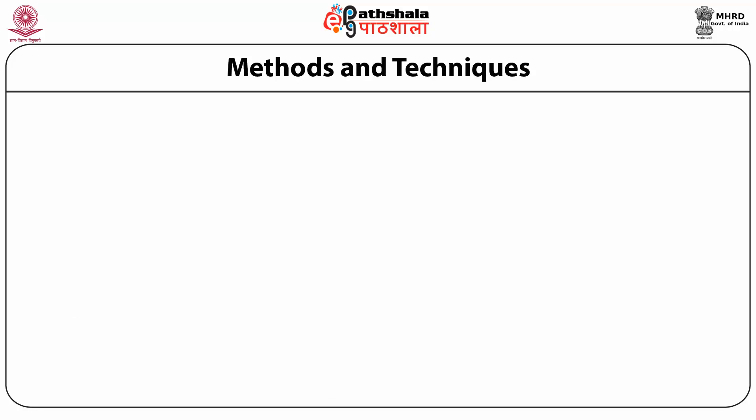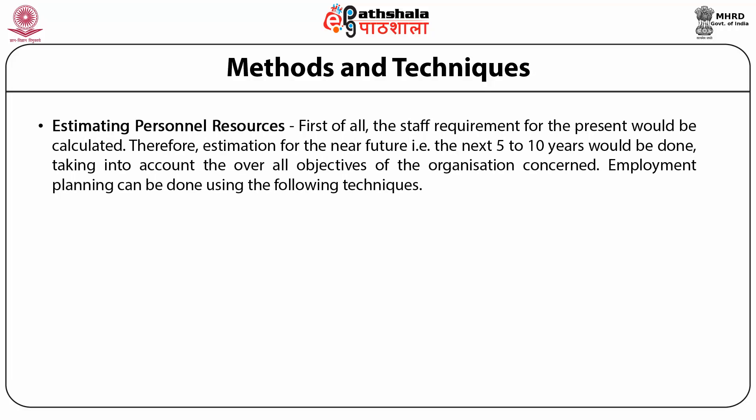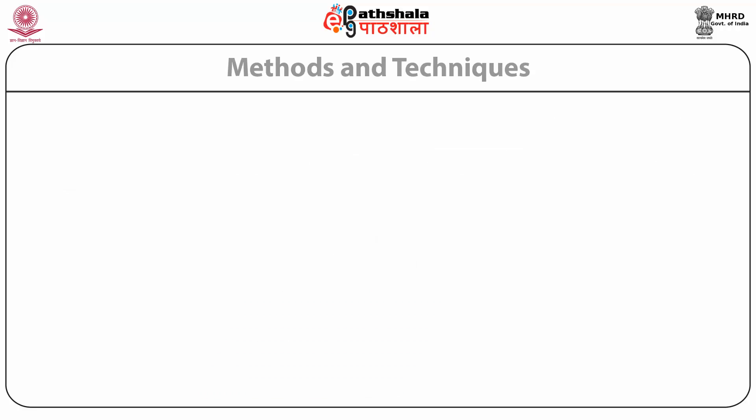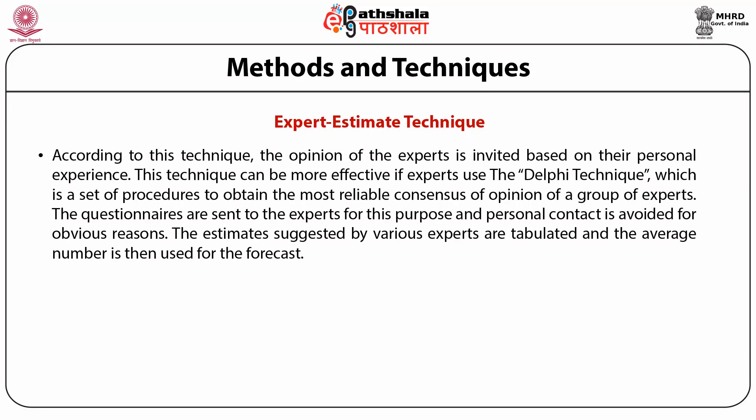Keeping in view the above factors, the following methods and techniques of human resource planning can be undertaken. First: estimating personal resources. Staff requirements for the present would be calculated, and thereafter estimates for the next 5 to 10 years will be done, taking into account the overall objectives of the organization. The expert estimate technique invites opinion of experts based on their personal experiences. This technique is more effective if experts use the Delphi technique — a set of procedures to obtain the most reliable consensus and opinions of a group of experts. Questionnaires are sent to experts and personal contact is avoided. Estimates suggested by various experts are tabulated and the average number is used for the forecast.